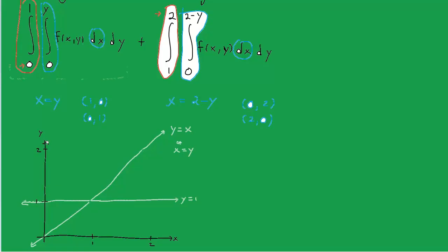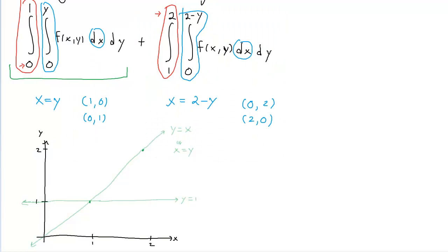So the first part of the integral is in this region of the plane which I can just paint. Oh, that did not work. Apparently I can't do that. It's going to be in this region. That's the first part.